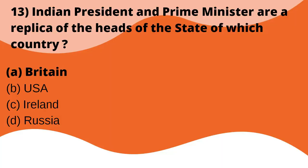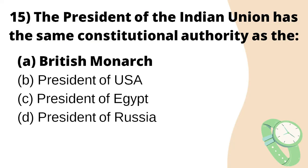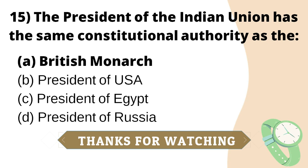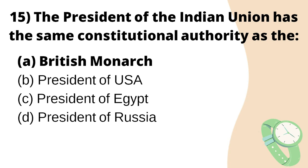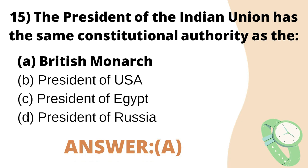The Indian President and Prime Minister are a replica of the heads of state of which country — Britain, USA, Ireland, or Russia? The right answer is option A — Britain. The President of the Indian Union has the same constitutional authority as which of the following — the British Monarch, President of USA, President of Egypt, or President of Russia? The right answer is option A — the British Monarch.